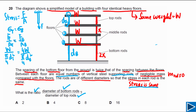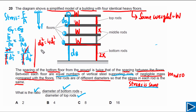Now we simplify by setting the two stress expressions equal. W and π/4 are common to both sides and cancel out, giving us db² = 4dt². Therefore db/dt equals the square root of 4, which gives a final answer of 2. The ratio between the diameter of the bottom rods and the top rods is equal to 2.